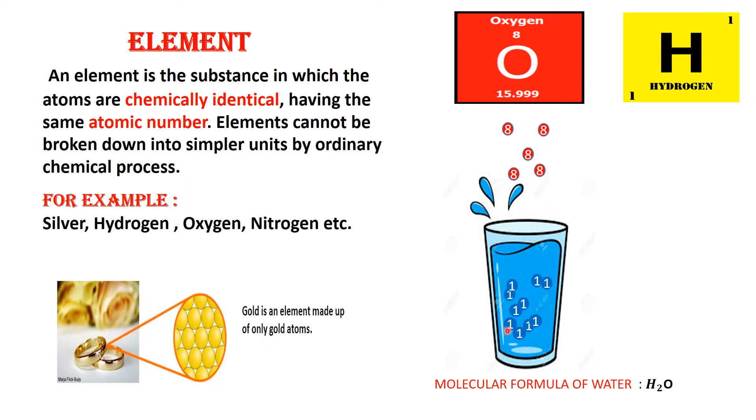And the atoms with the atomic number 1 all belong to the element hydrogen. So, the atomic number defines to which element an atom belongs to. So, an element is a substance in which the atoms are chemically identical. All these atoms are chemically identical and they have the same atomic number.